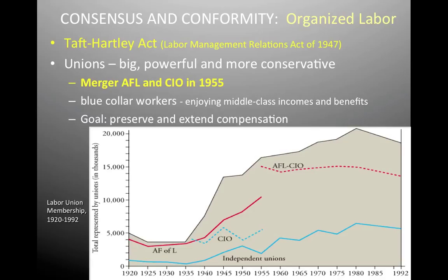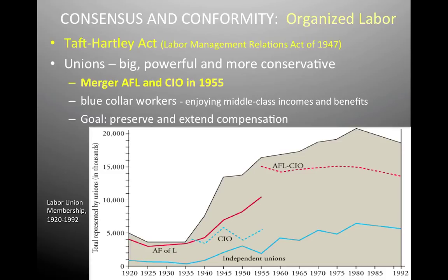Basically what the Taft-Hartley Act does — and I want you to write this out — it amends FDR's Wagner Act. Remember the Wagner Act of the 1930s and 40s, which basically limited the power of business and allowed people to collectively bargain. Well, what the Taft-Hartley Act does is amend that Wagner Act and make it a little bit harder for labor unions to strike.